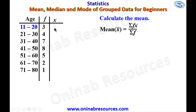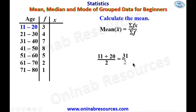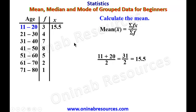For the first class interval, we add the lower class and the upper class — that is 11 plus 20 — then divide by 2. 11 plus 20 is 31, divided by 2 gives 15.5. Therefore the mid-value of 11 to 20 is 15.5.